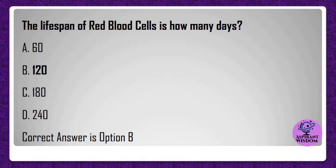The lifespan of red blood cells is how many days? A) 60, B) 120, C) 180, D) 240. Correct answer is option B.